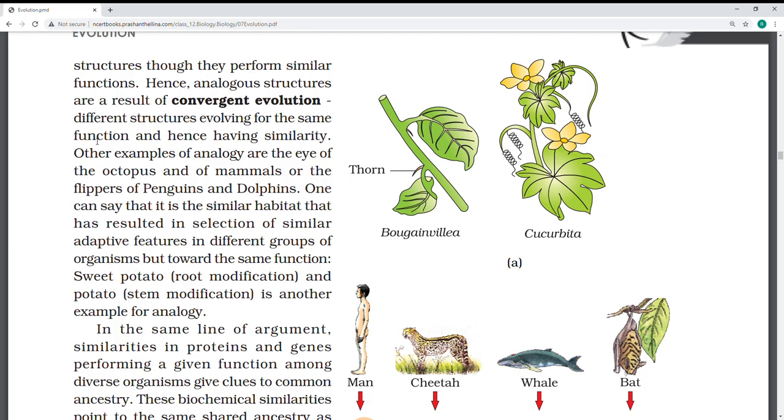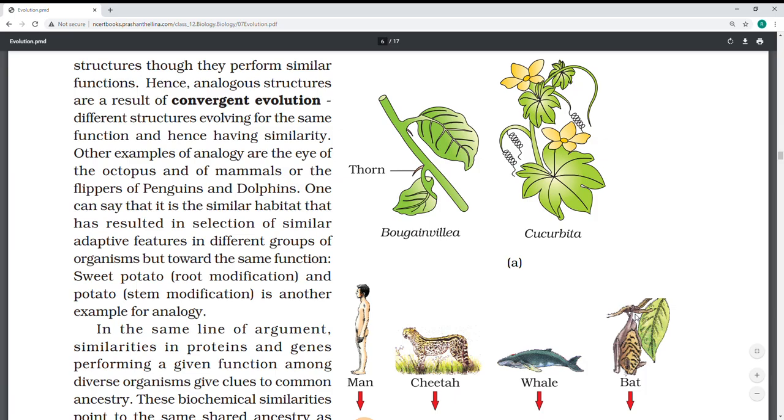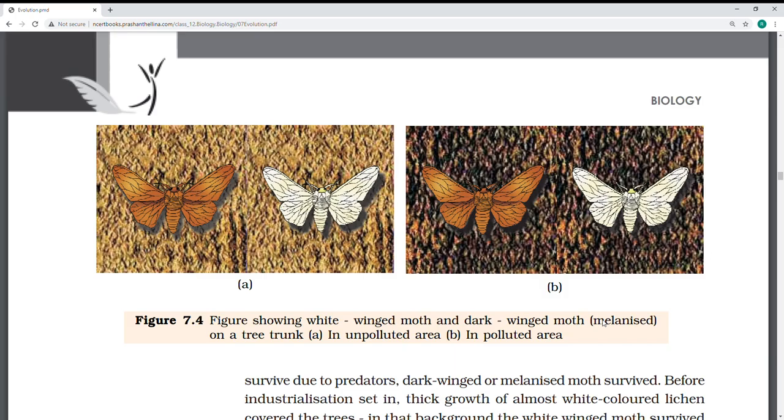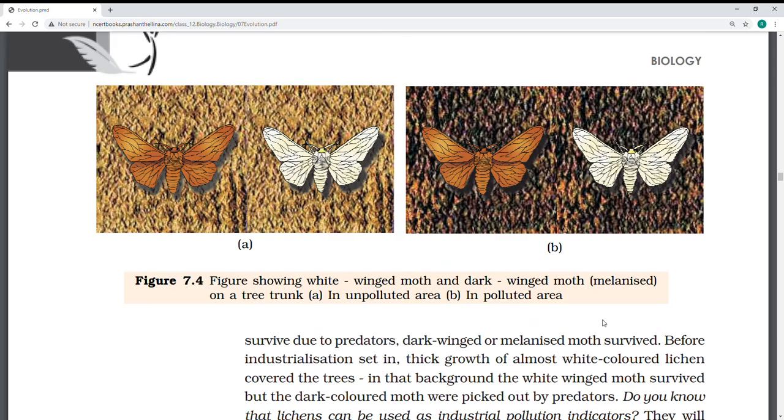Convergent evolution - analogous structures are results of convergent evolution. What are analogous organs? Organs which perform similar function but have different origin and structures. That is, if you see wings of a bat, birds, and insects - these moths are examples for those.